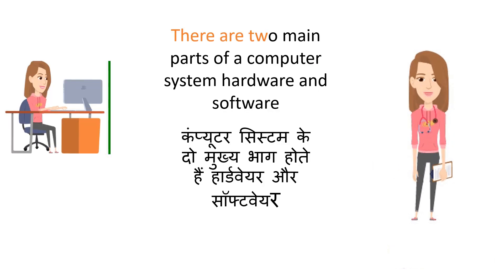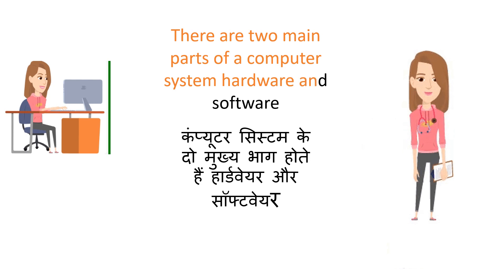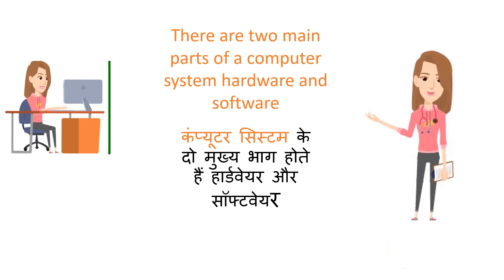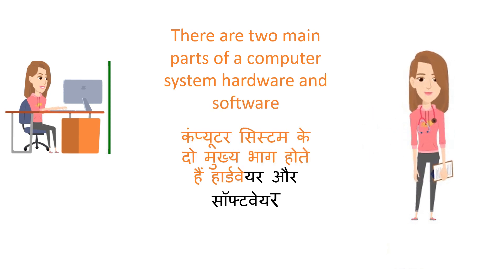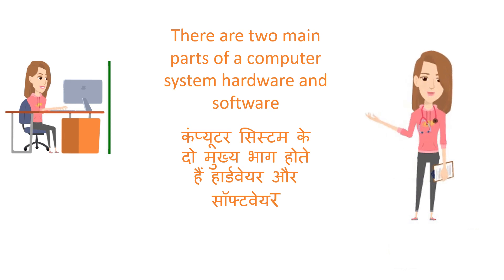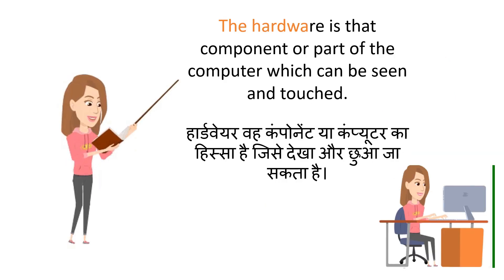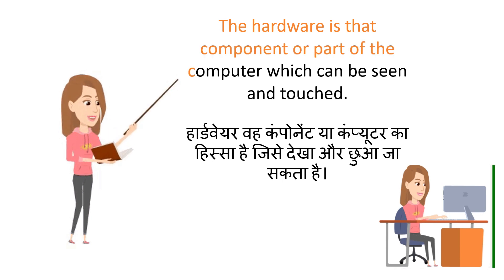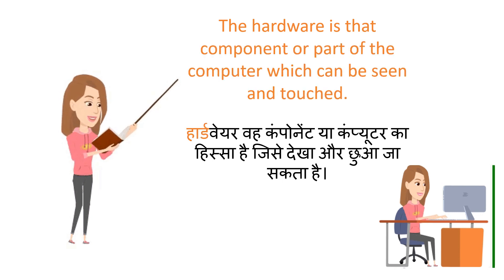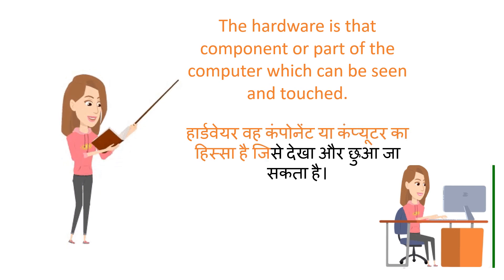There are two main parts of a computer system: Hardware and Software. Computer system ke do mukhi abhaag hote hain: Hardware aur Software. The hardware is that component or part of the computer which can be seen and touched. Hardware wa component ya computer ka hissah hai jisay dekha aur chua ja sakta hai.